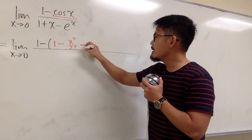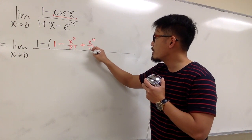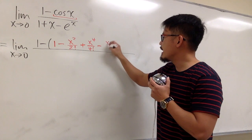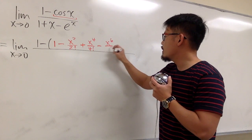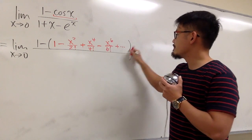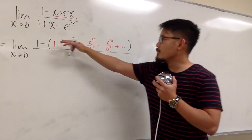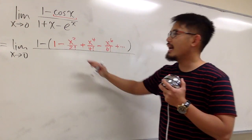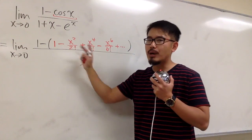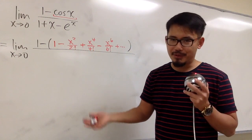The next term is plus x to the fourth power over 4 factorial, then minus x to the sixth over 6 factorial, and so on. For cosine x, it's all the even powers and even factorials, and it's alternating. For sine x, it's all the odd versions.